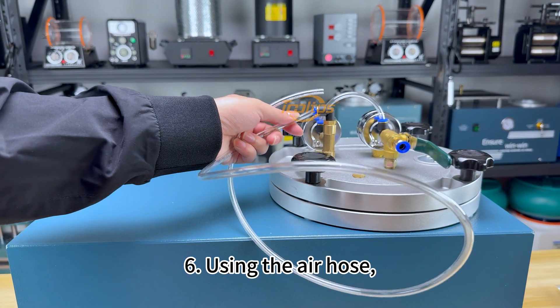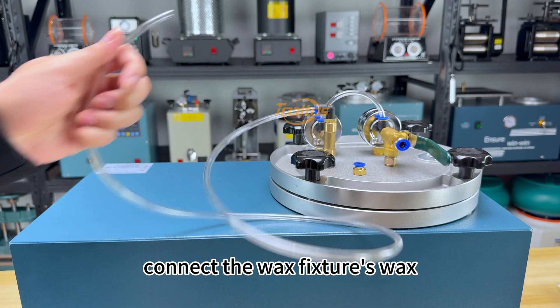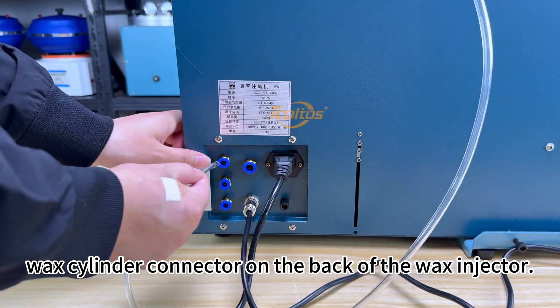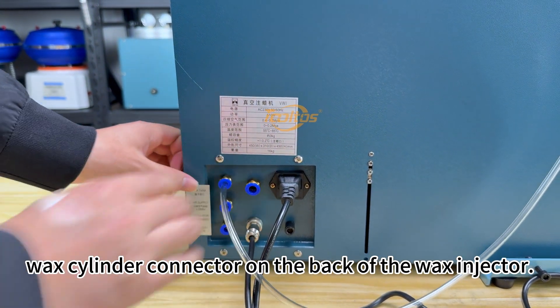6. Using an air hose, connect the wax fixture's wax cylinder connector to the wax cylinder connector on the back of the wax injector.